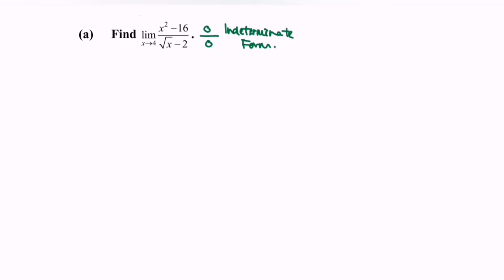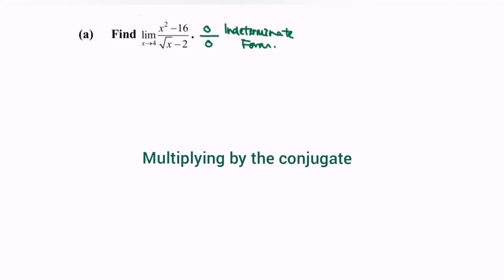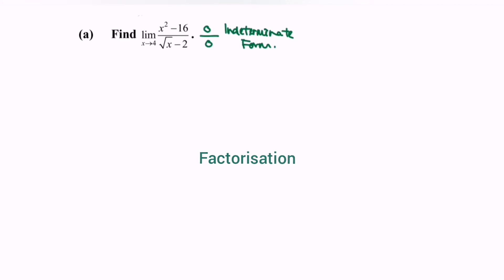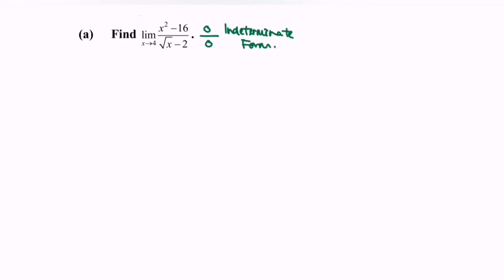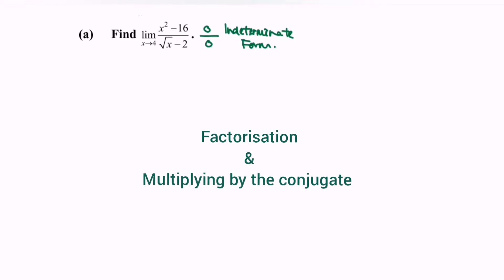There are 3 types of strategy that we can use to solve this kind of situation. Number 1: multiply by the conjugate. Number 2: factorization. Number 3: long division. My suggestion for this type of question would be to multiply by the conjugate and at the same time factorize the situation.